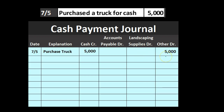The other side goes to 'other' in this case. We're showing all types of transactions where cash goes out, instead of just the normal ones — typically buying landscaping supplies, inventory, or paying something off on account. The cash payment journal has more columns because there are many things we pay with cash. If a transaction happens frequently, we might add a dedicated column; if it's rare, we list it in the 'other' category.